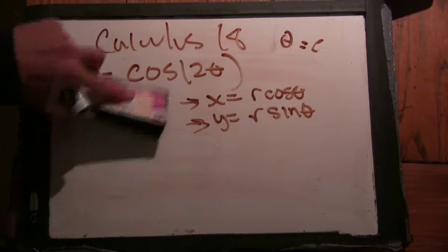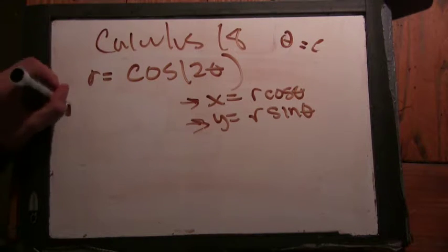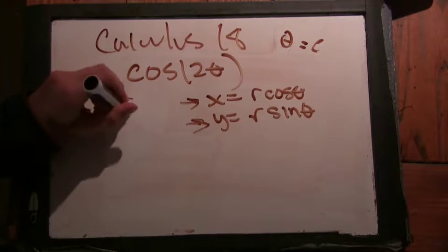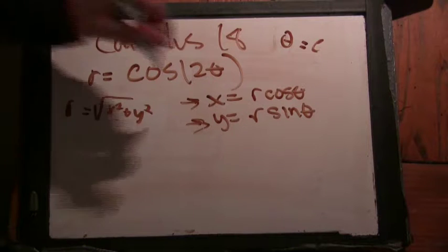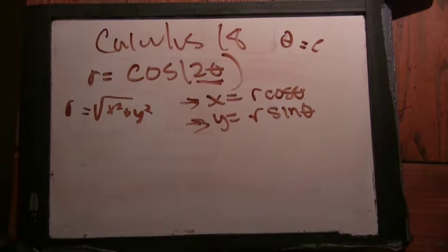Well, your r is fine. You don't need to erase that. Well, then it's cosine of 2θ instead of θ.